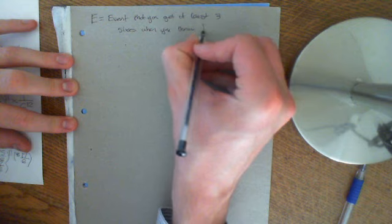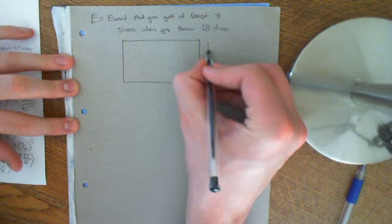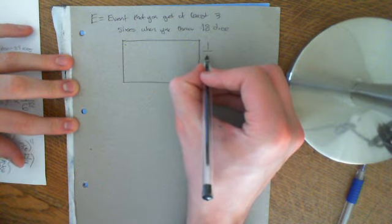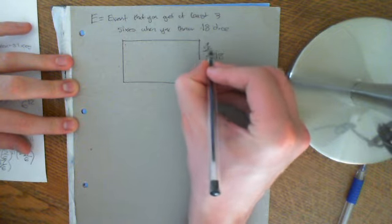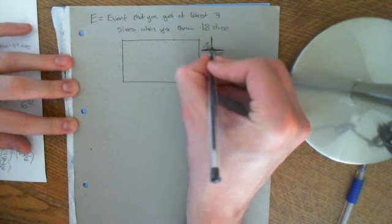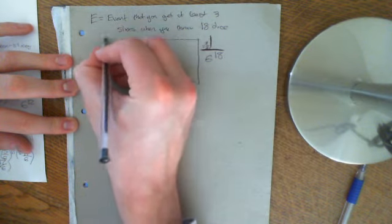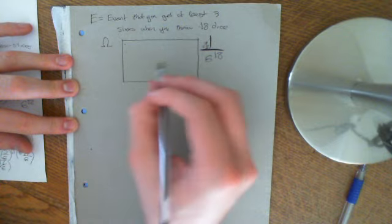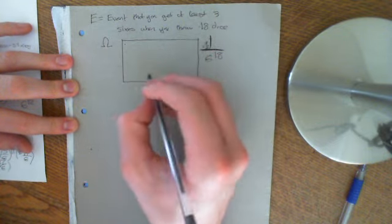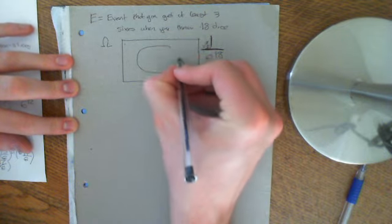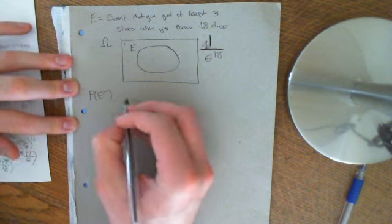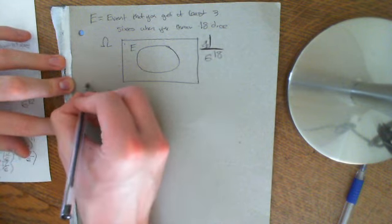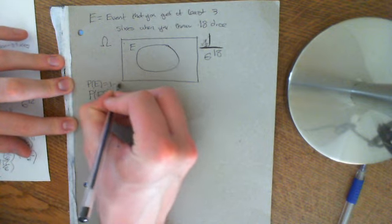The sample space now has 6^18 possible outcomes, and the probability of a specific outcome is 1/6^18. Once again, it's easier to find P(E complement) and take 1 - P(E complement). So P(E) = 1 - P(E complement).